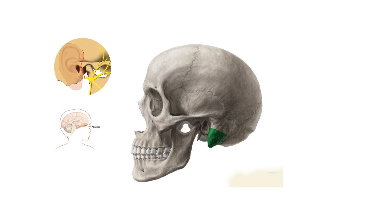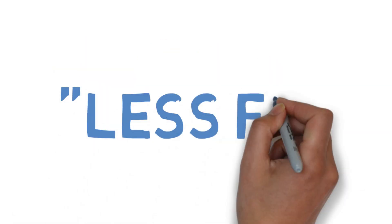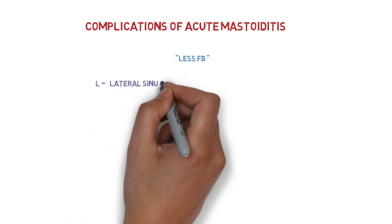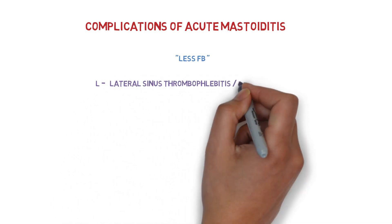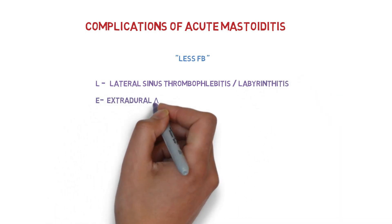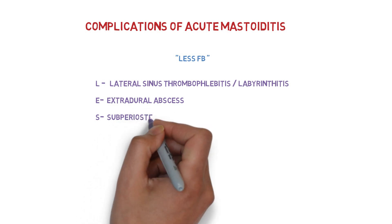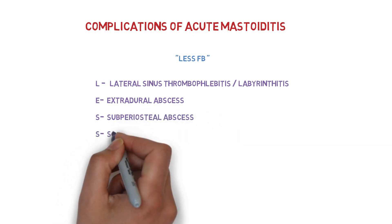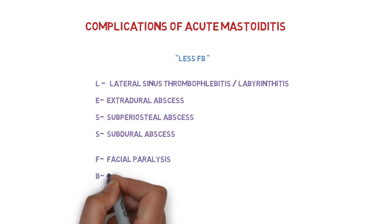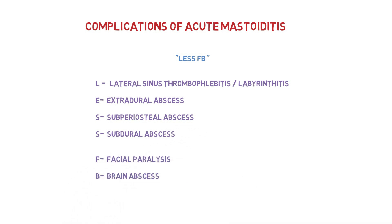To remember all these complications, there is a simple mnemonic: LES-FB — think of it as Facebook. L stands for lateral sinus thrombophlebitis or labyrinthitis; E for extradural abscesses; S for subdural or sub-periosteal abscesses; F for facial paralysis; and B for brain abscesses. This covers all the important complications of acute mastoiditis for your competitive exams.